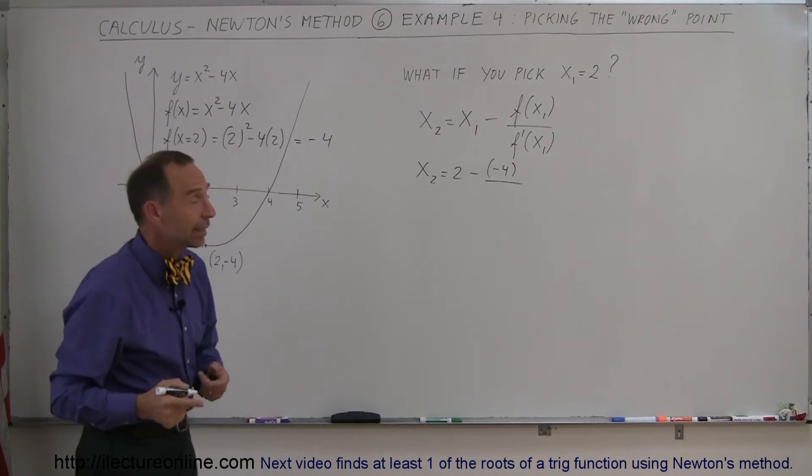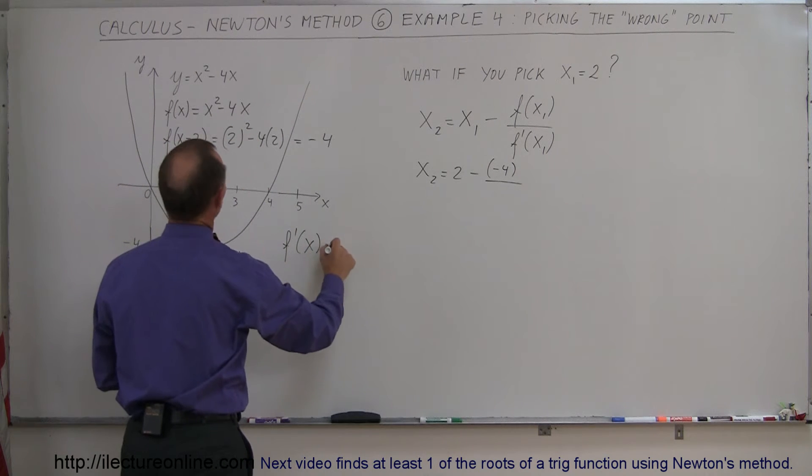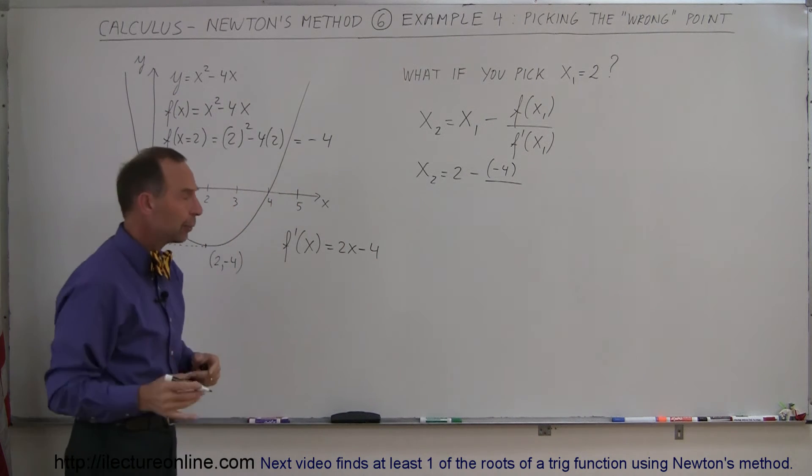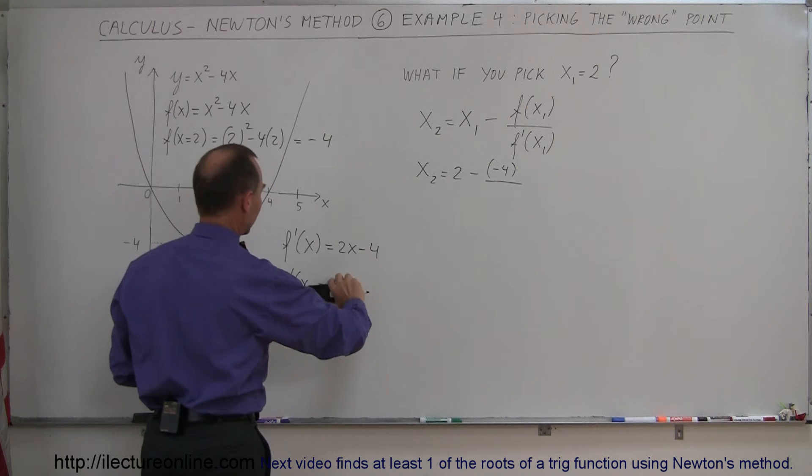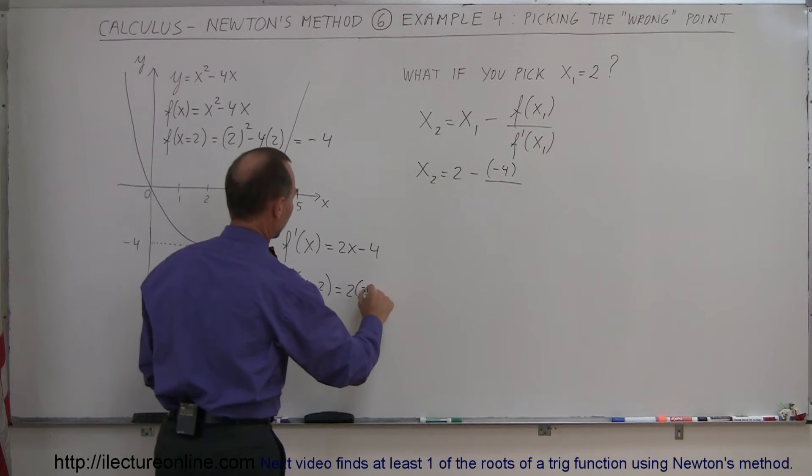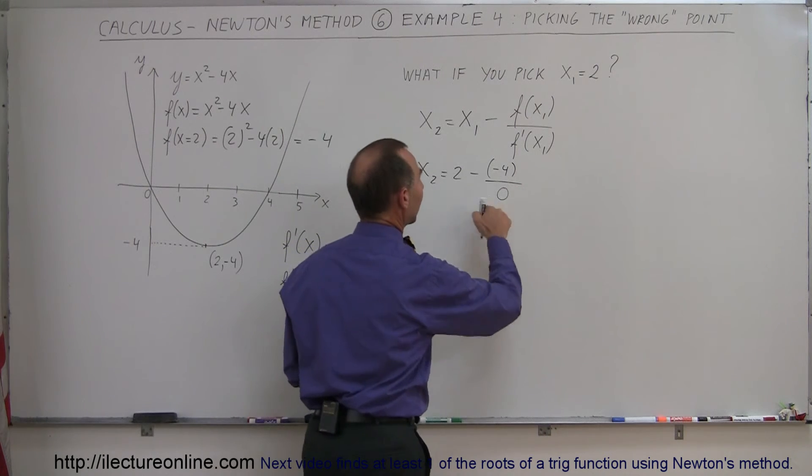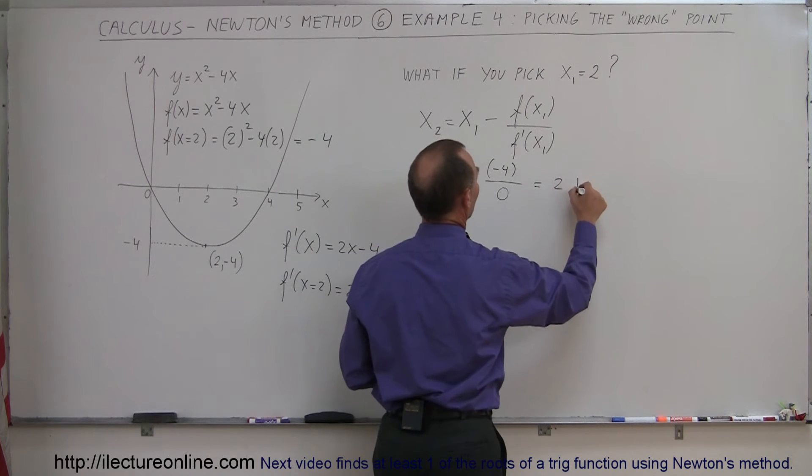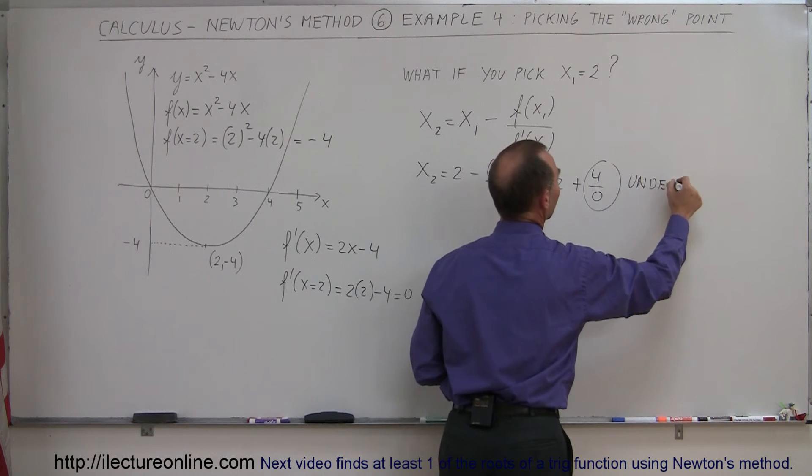Now we take the derivative and evaluate it at that same point. So the derivative of the function, f prime of x, is going to be equal to 2x minus 4. Now we evaluate it at x equals 2, so f prime of 2 is equal to 2 times 2 minus 4, which is equal to 0. And so we plug that in, and all of a sudden we realize, oh, wait a minute, that's the denominator - we're dividing by 0. That would be undefined. So what we get here is this is equal to 2 plus 4 over 0. Since this is undefined, we cannot find the next point.